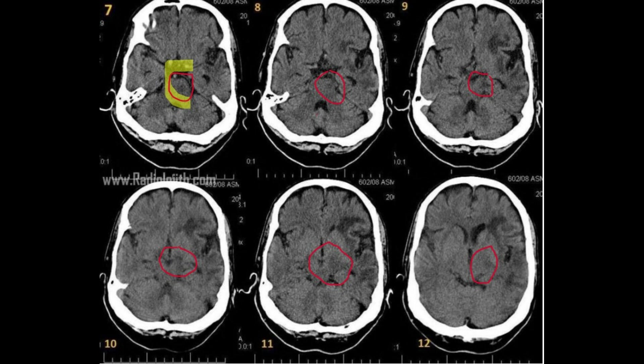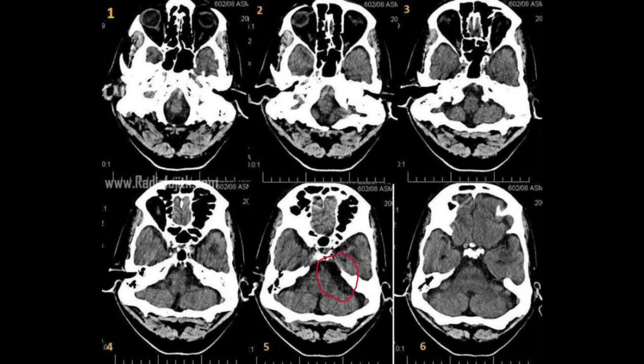With a closer look, you can notice hypodensity in the left cerebral peduncle of the midbrain and also in the adjacent pons, with prominence of the left ambient cistern and of the left cerebellopontine cistern. The CPA cistern is more prominent on the left side in comparison to the right side.